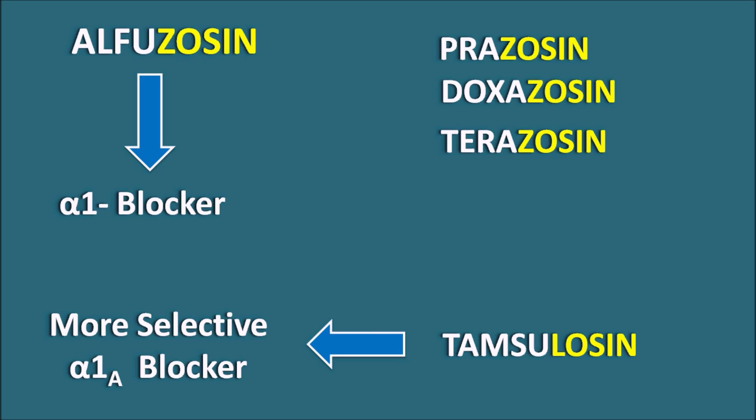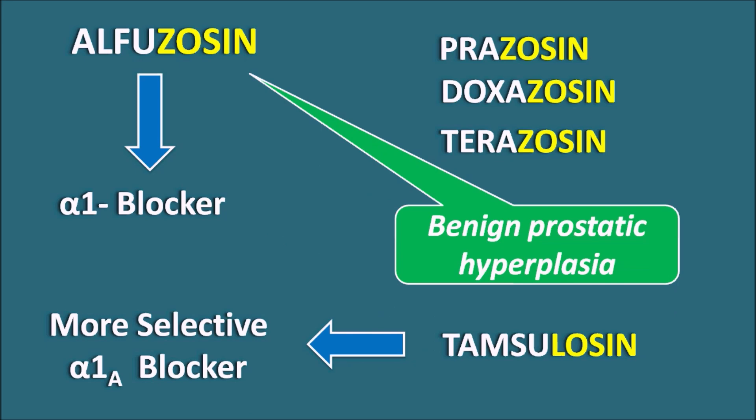Alfuzosin is also selective towards the alpha-1A receptors, which are located on the bladder as well as the prostate tissue. But apart from these alpha-1A receptors, it can also block other types of alpha-1 receptors. That's why Alfuzosin can be used in the treatment of benign prostatic hyperplasia (BPH). Today let us see how Alfuzosin is useful in BPH, along with its side effects and precautions.